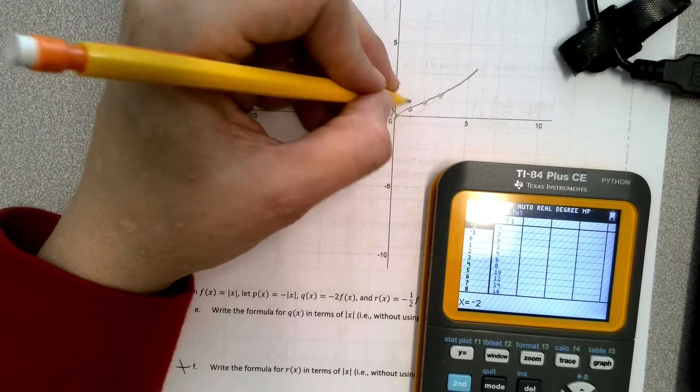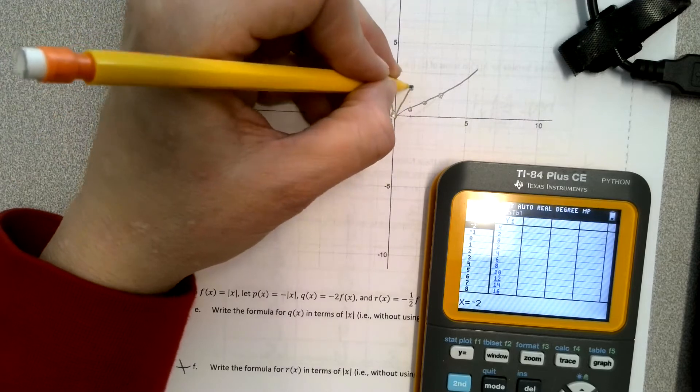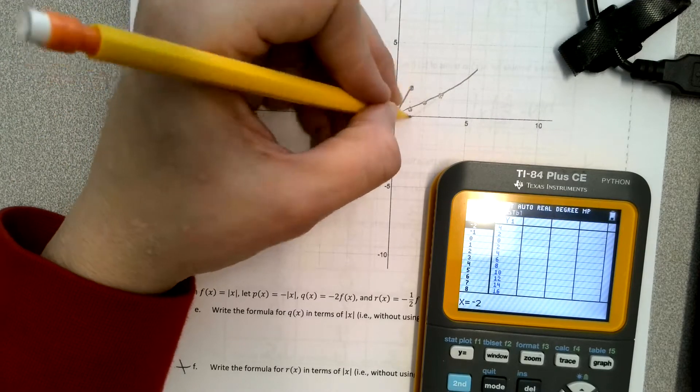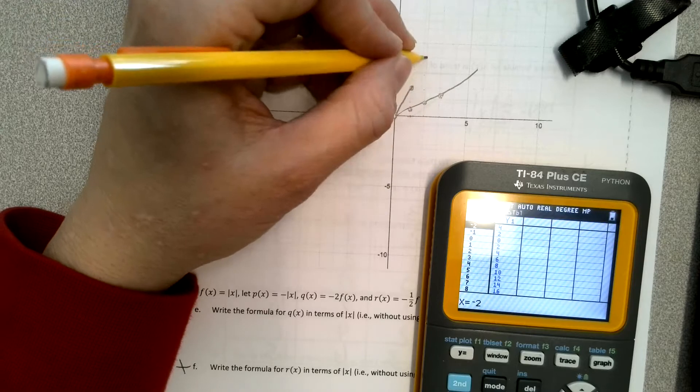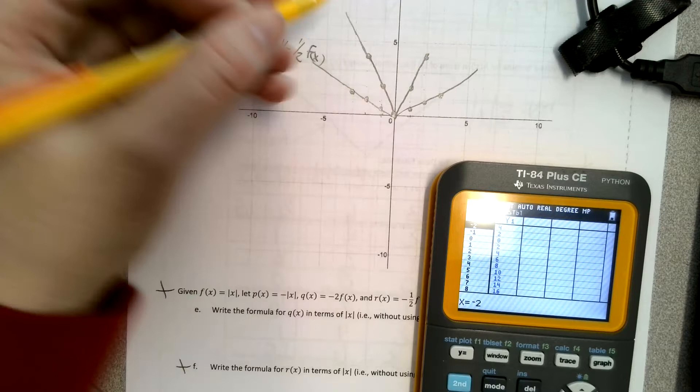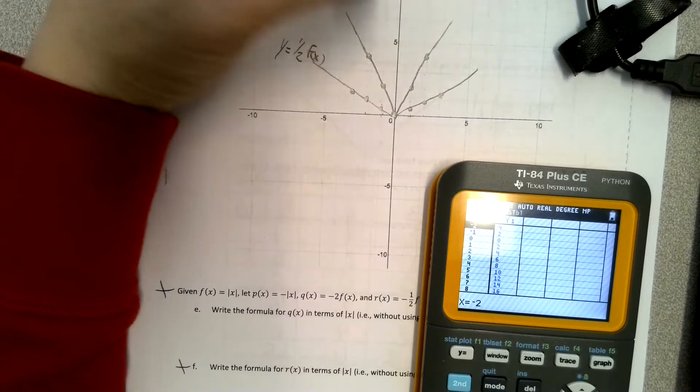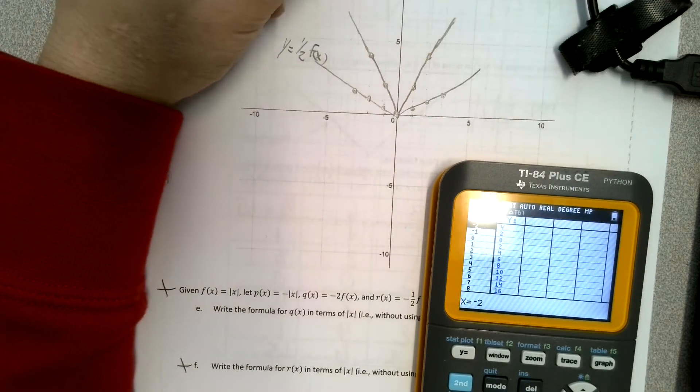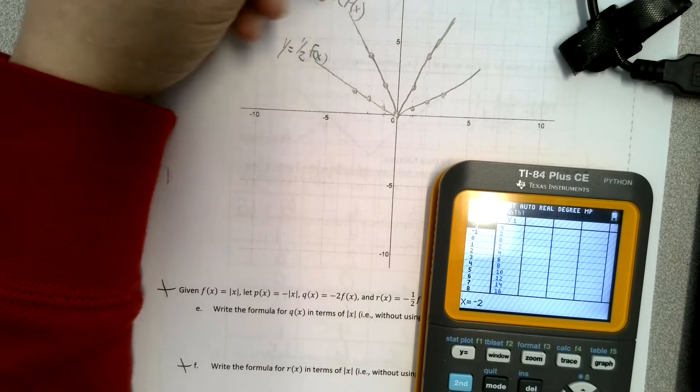And then over to the 1, up 2, over to the 2, up 1, 2, 3, 4, so on and so forth. And then this one's just going to follow suit. And this one, we have to label it y equals 2 f of x.